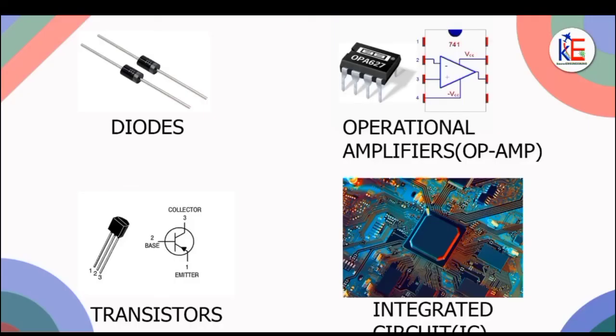This phenomenon of the p-n junction is the basis on which all semiconductor devices, such as diodes, transistors, operational amplifiers, and ICs, operate.